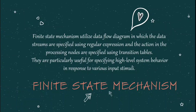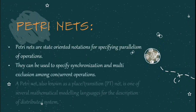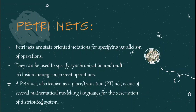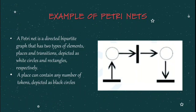Next, let's move on to the last example: Petri nets. Petri net, also known as a place-transition net, is one of several mathematical modeling languages for the description of distributed systems. It is a class of discrete event and dynamic systems. It has two types of elements: places and transitions, depicted as white circles and rectangles respectively. A place can contain any number of tokens, depicted as black circles. A transition is enabled if all places connected to it as inputs contain at least one token. The specified example is a Petri net trajectory, which contains a number of marks called tokens.